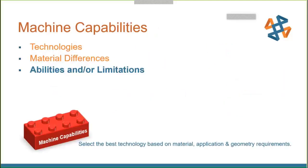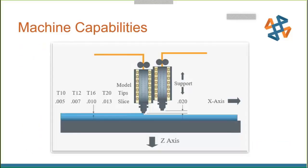Now we want to look at abilities and limitations — this is really where design makes the difference. Knowing what your machine can do and what it cannot do allows you to design around that for your parts.